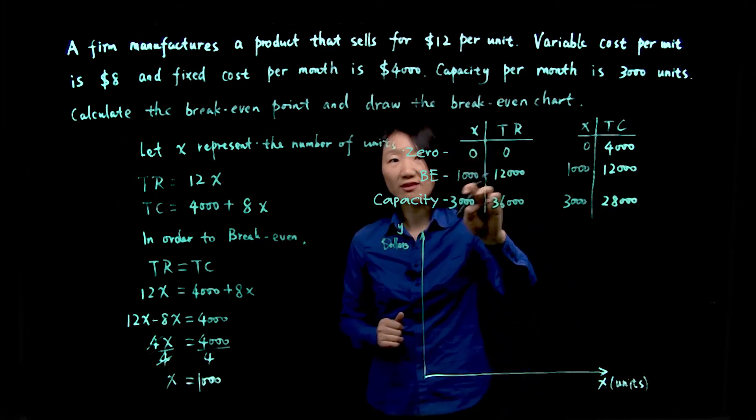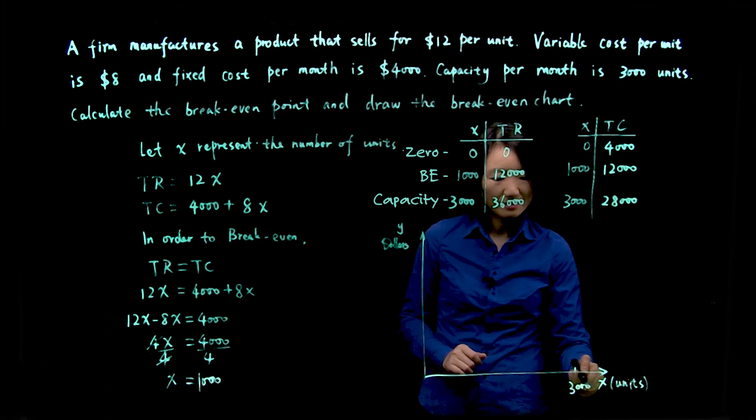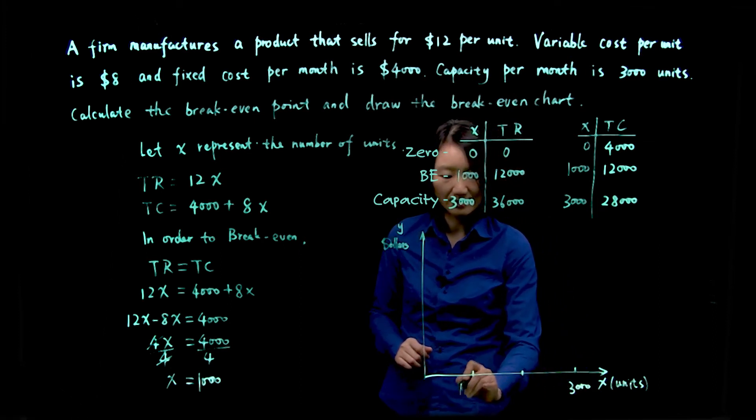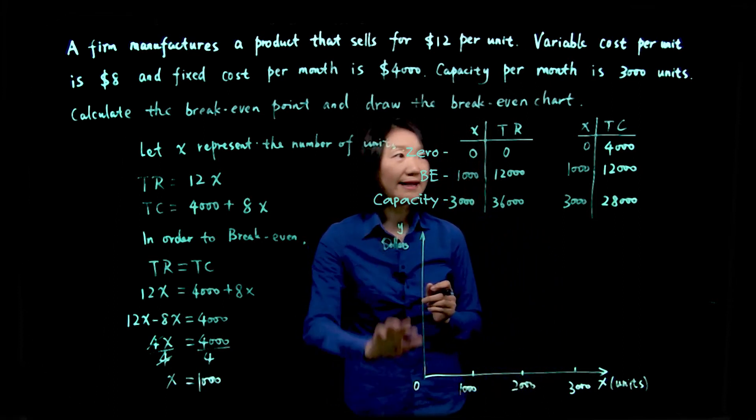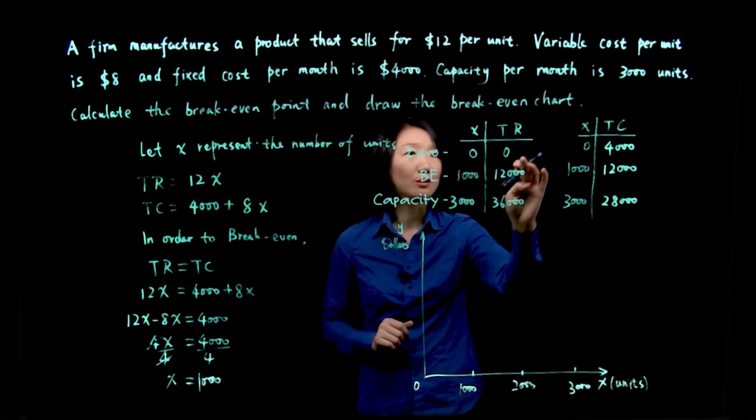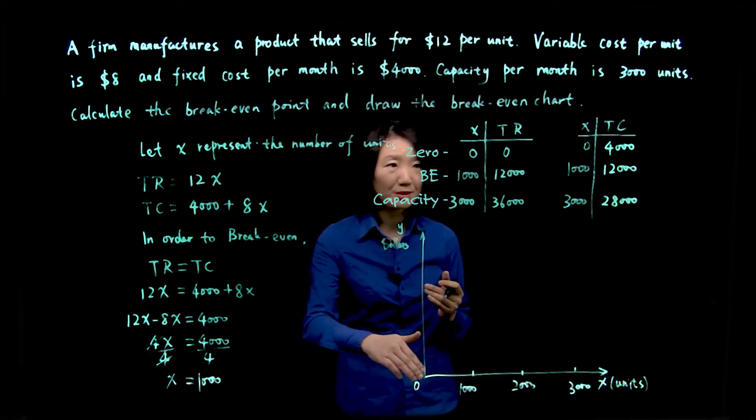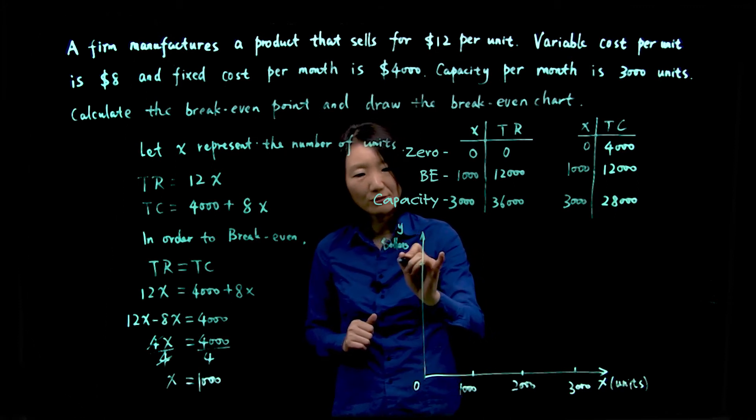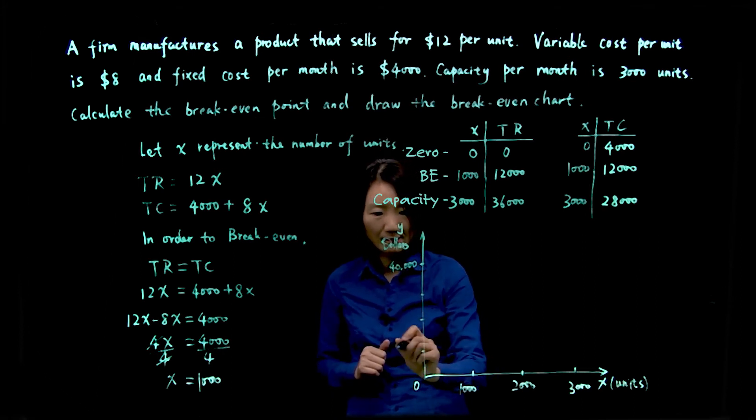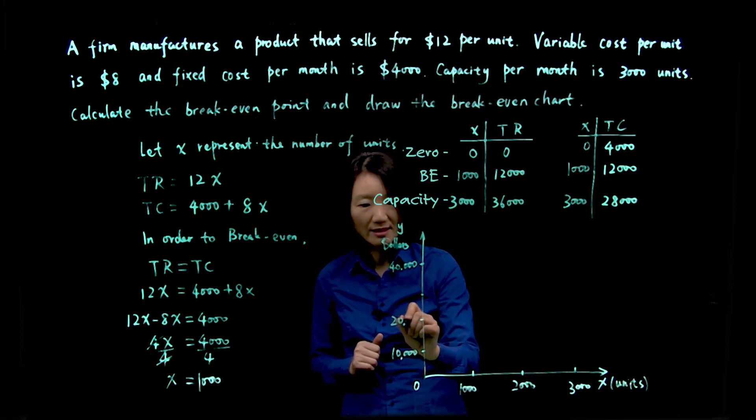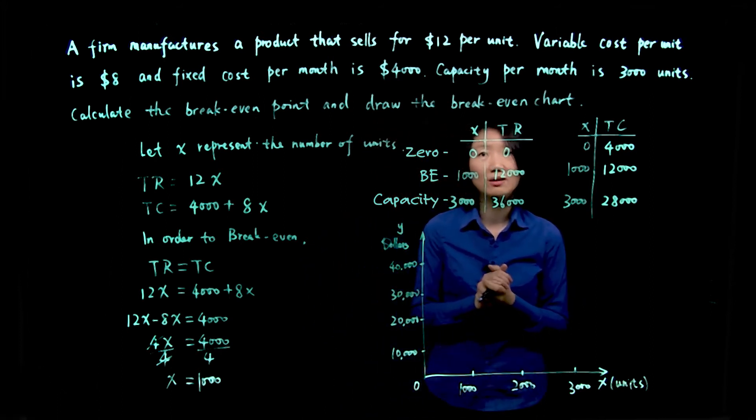My x value is going to be zero, 1,000, 3,000. So I want to make sure I can accommodate up to 3,000, and I have 2,000, 1,000, and here's zero. And for y-axis, we're talking about dollars. So up to 36,000, that's the largest number here. So I need to make sure I can accommodate between zero and 36,000. Let's make it 40,000. So I have 10,000, 20,000 here, 30,000 here. Now we're ready with our scale.